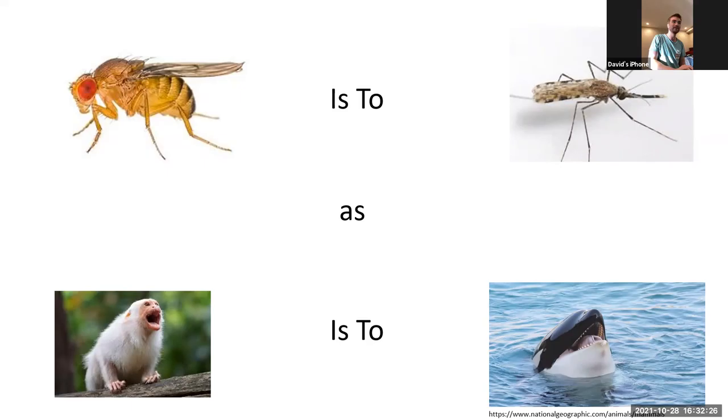And so some general take-homes is we built this wind tunnel system. We can initiate olfactory stereotype search behaviors without using any sort of chemical. We do it entirely with the optogenetics, and this allows us to very finely tune control the exact stimulus we put into a freely flying insect. We found that we can mess around with the neuromechanics of freely flying flies by activating this in other brain regions. And we're starting to find some really interesting differences between the way walking flies will respond to different stimuli as compared to freely flying flies. And so on that note, I will take questions, comments, whatever you have. Thank you.